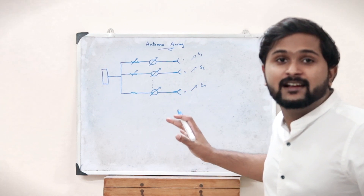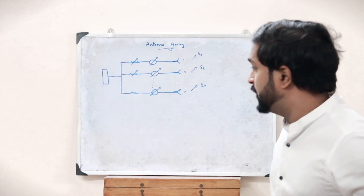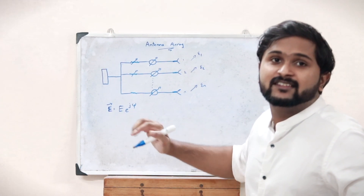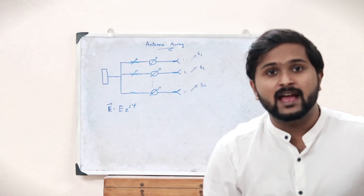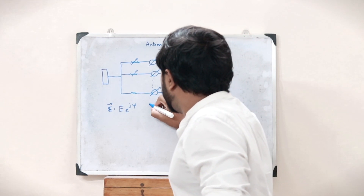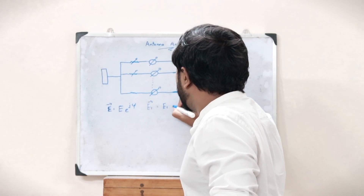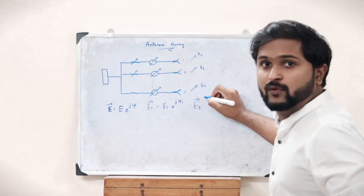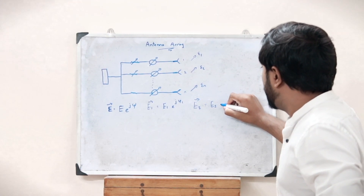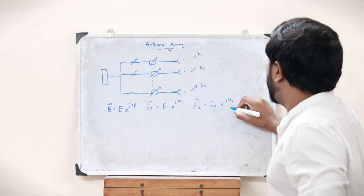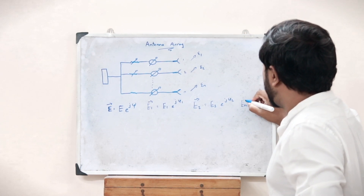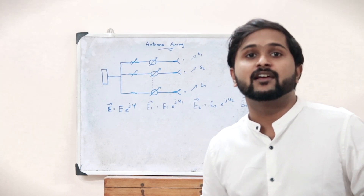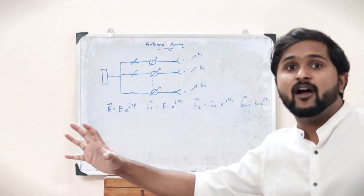The electric field of each antenna element is given by the equation: E = |E| · e^(jψ), where ψ is the phase of each element. So e1 = |e1| · e^(jψ1), e2 = |e2| · e^(jψ2), and en = |en| · e^(jψn). This is how we find the electric field of each individual element in the antenna array.